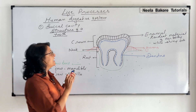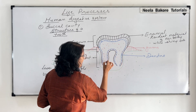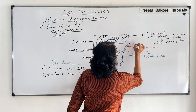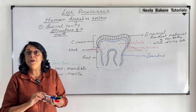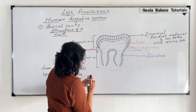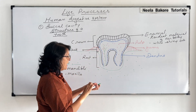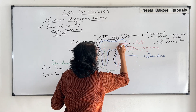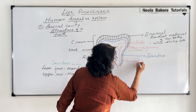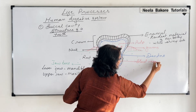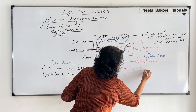The inner part of the tooth is known as the pulp. In this pulp are present cells, blood vessels, and nerve fibers. From here you can see some nerve fibers going, and there are blood vessels also.